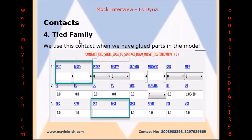Coming to the Tied Family, if two parts are glued in reality then go with Tied Contacts. Tied Contact is a Permanent Contact. There are different types of Tied Contacts out of which Tied Shell Edge to Surface Beam Offset is preferable as it will transfer both nodal displacements and rotations.